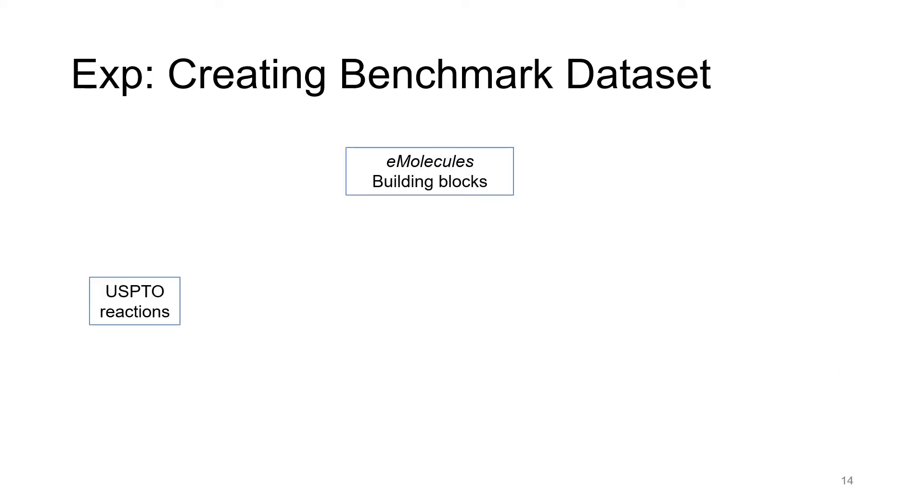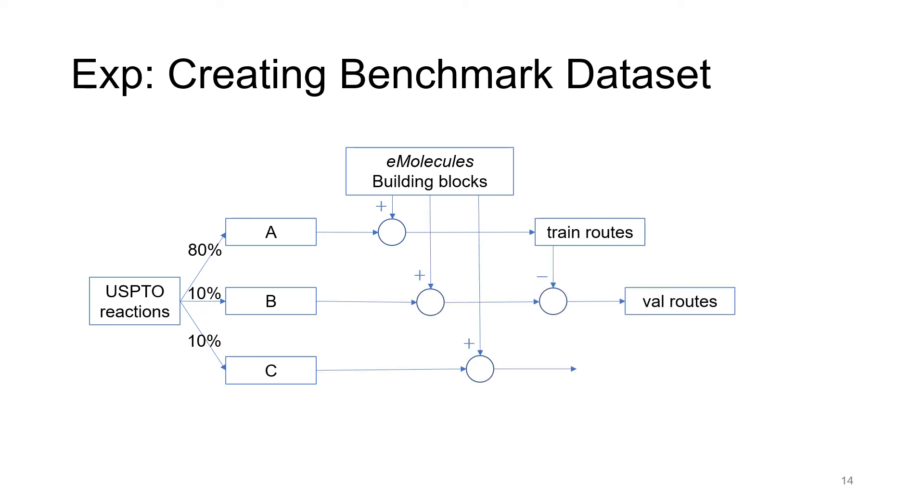To create the retrosynthesis dataset, we use reactions in USPTO to build a knowledge graph, from which we extract synthesis routes and split them into training, validation, and test set. The available molecule list is obtained from the eMolecules database. Furthermore, the training reactions are used to train the one-step model B, which is used in RetroStar and all the other baselines.